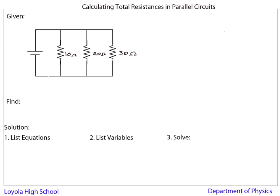In this video, I'm going to talk about how to calculate total resistances in parallel circuits. So in this parallel circuit, I have a 10 ohm, 20 ohm, and 30 ohm resistor.